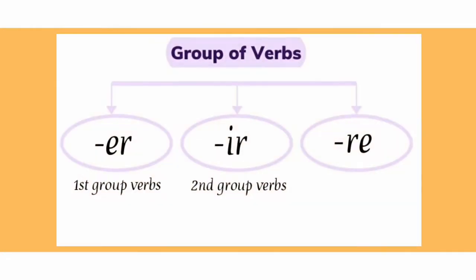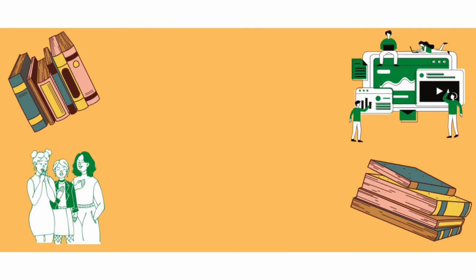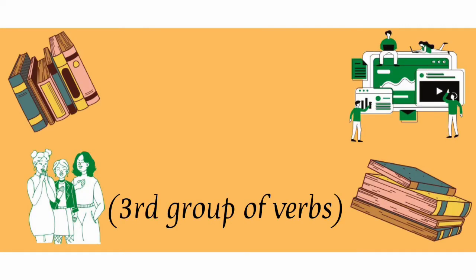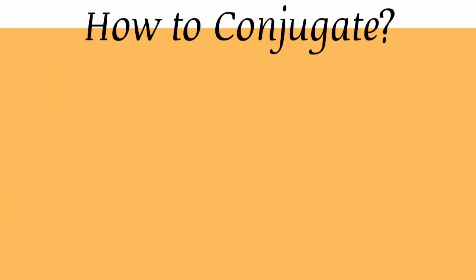Out of the three groups of verbs, we have already done the first group and second group, that is -er and -ir, in detail. We have also understood the irregular verbs that do not take exactly the same conjugation of their own group. We will now start with the third group of verbs, that is the verbs which end in -re, and we will also cover the other irregular verbs. So now let's see how to conjugate the third group of verbs.